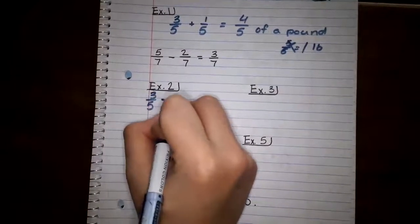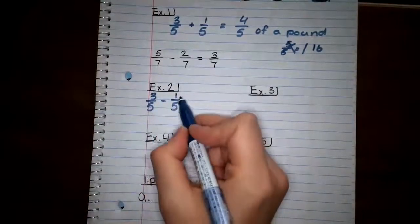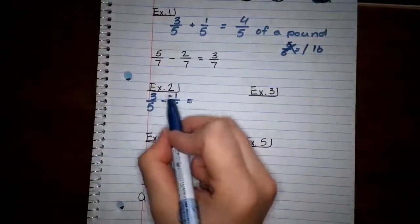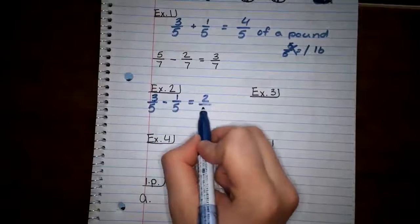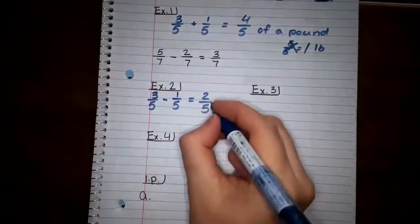And we're going to subtract one fifth. We had three fifths of yard of a ribbon and we took one fifth away. So now we need to figure out what was not used. Three minus one is two. Remember our denominator does not change. And now we get two fifths of a yard.